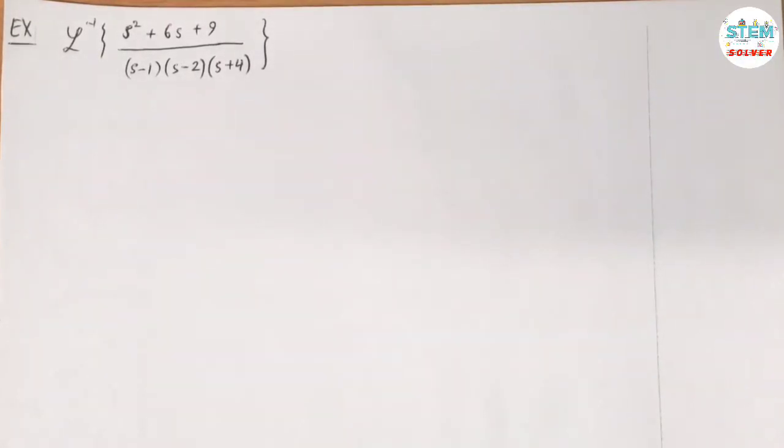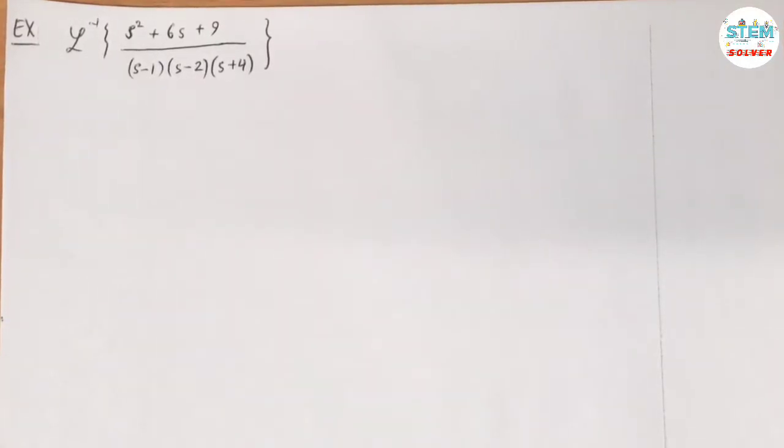Find the inverse transform of x² plus 6x plus 9 over (x minus 1) times (x minus 2) times (x plus 4).